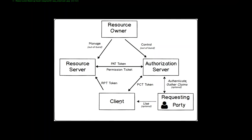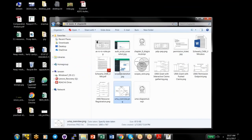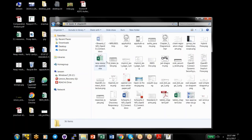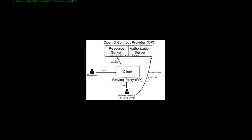In OpenID Connect, we actually have the same three parties — resource server, authorization server, and client — but the resource server and authorization server are bundled into one unit called the OpenID Provider. The resource server is essentially the UserInfo endpoint, and the authorization server provides the token and authorization endpoints. So OpenID Connect feels like two parties: the relying party and the OpenID Provider, just like SAML has IDP and SP.